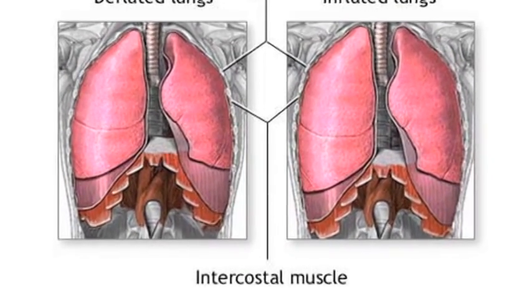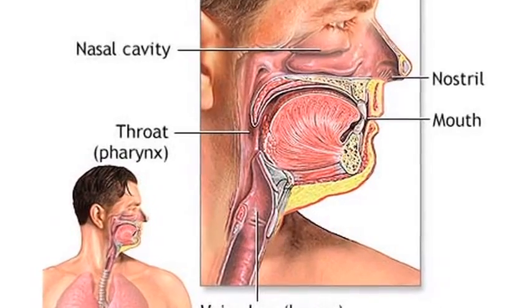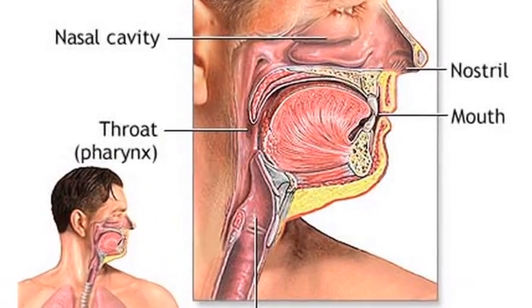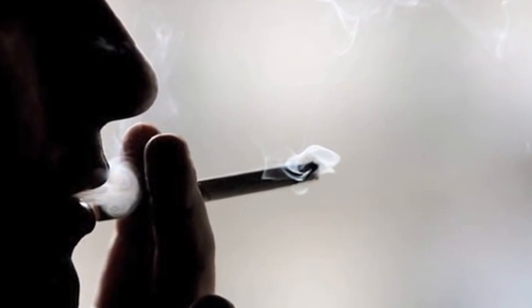Those cancerous cells obviously don't work like regular cells do, plus they have a tendency to spread through the lymph system, as we talked about in another segment, to other parts of the body. So lung cancer is also probably caused by smoking more than anything else. Smoking is probably the single biggest risk factor for lung cancer.